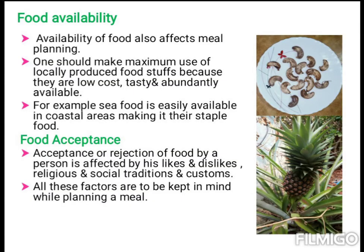Food availability is another factor to be considered. Availability of food affects meal planning, and one should make maximum use of locally produced foodstuffs because they are low cost, tasty, and abundantly available. For example, seafood is easily available in coastal areas, making it a staple food there. Food acceptance or rejection by a person is affected by likes and dislikes, food-related religious and social traditions, and customs — all of which must be kept in mind while planning a meal.